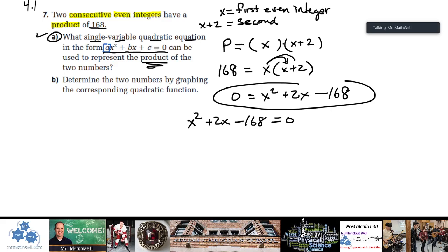Now B says determine the two numbers by graphing the corresponding quadratic equation. If we're graphing the corresponding quadratic equation, I'm going to want to either make a graph on graphing technology, use a table of values, use intercepts to plot some important points, or find the vertex. We could graph this on graphing technology, but let's say you were asked on a test to graph this using a table of values.